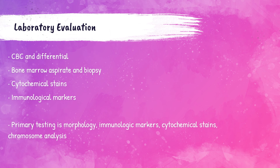For laboratory diagnosis, the patient first gets a complete blood count and differential. The laboratory professional identifies the issue and flags it for pathology review. A pathologist then reviews it, determines leukemia is likely, and orders a bone marrow collection. The bone marrow is aspirated and biopsied, then flow cytometry is performed to identify immunological markers, and cytochemical stains are performed to determine the lineage of the leukemia — whether it affects the lymphocyte or erythrocyte line.